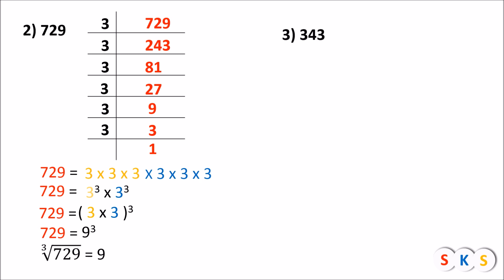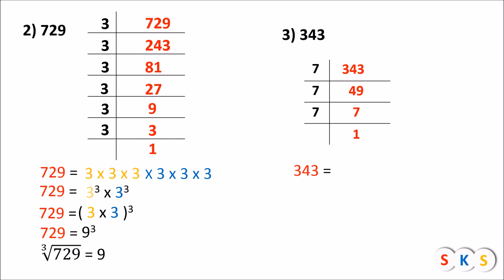Next question: 343. We find the prime factors of 343. 343 is divisible by 7: 7 × 49 = 343. Dividing 49 by 7 gives 7. Dividing 7 by 7 gives 1. So 343 can be written as 7 × 7 × 7. There is only one group of three 7s, so 343 equals 7 raised to 3. Therefore the cube root of 343 equals 7.